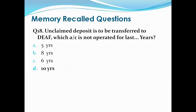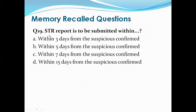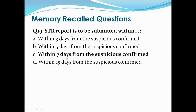Question 19: An STR (Suspicious Transaction Report) is to be submitted within how many days? Options are: within three days from suspicion confirmed, within five days, within seven days, within fifteen days. The right answer is within seven days. A helpful memory trick: 'S' for suspicious and 'S' for seven — so seven days to submit a suspicious transaction report. This question is frequently asked in bank promotion exams.